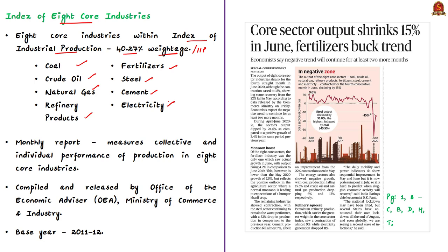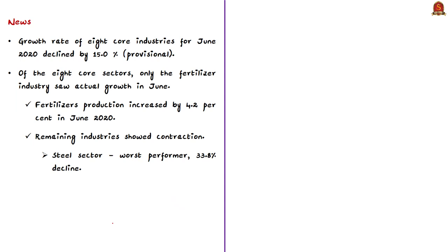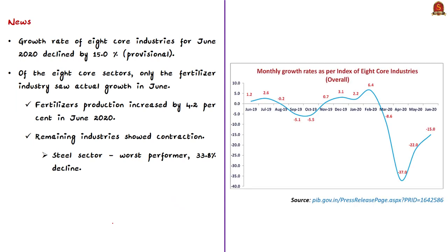The Index of Industrial Production is released by the Ministry of Statistics and Programme Implementation, whereas the index of eight core industries is a monthly report that measures collective and individual performance of production in these eight core industries. It is compiled and released by the Office of the Economic Advisor in the Ministry of Commerce and Industry. The base year of the index of eight core industries is 2011-12.